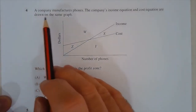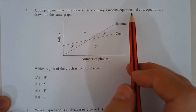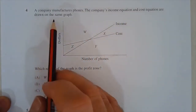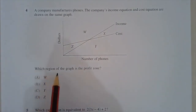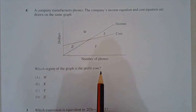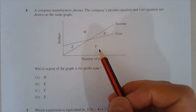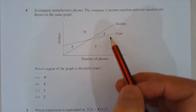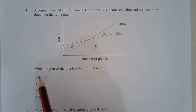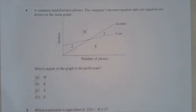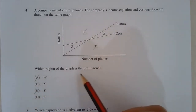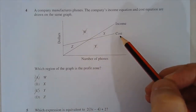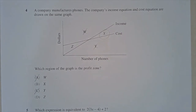Question 4. A company manufactures phones. The income equation and cost equation are drawn on the same graph. Which region is the profit zone? Zones W and Y are outside the two lines and make no sense. It's between B and D. A profit is made when income is greater than cost, which corresponds to zone X. The answer is option B.